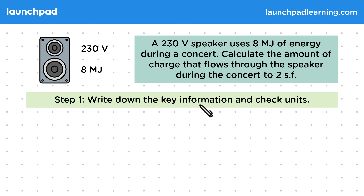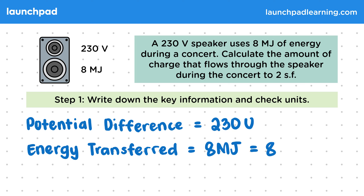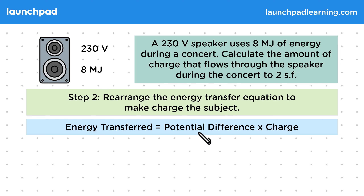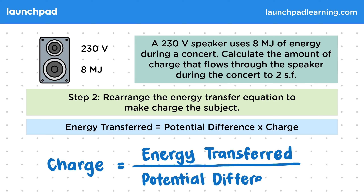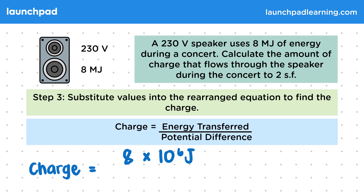For step one, write down the key information and check the units. The potential difference is 230 volts, and the energy transferred is 8 megajoules — equal to 8 million joules, or 8 × 10⁶ joules. We want to calculate the charge. For step two, rearrange the energy transfer equation to make charge the subject by dividing both sides by the potential difference: charge equals energy transferred divided by potential difference. For step three, substitute the values: charge equals 8 × 10⁶ joules divided by 230 volts.